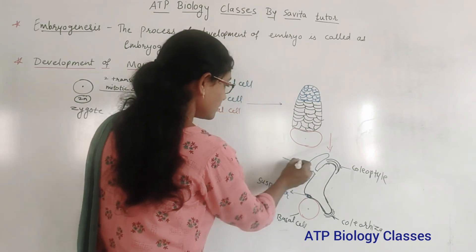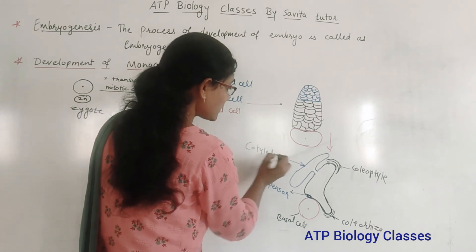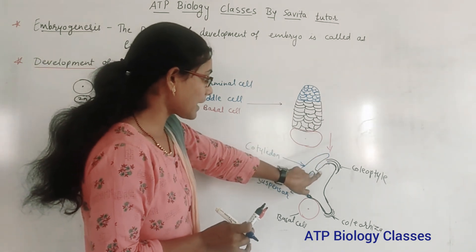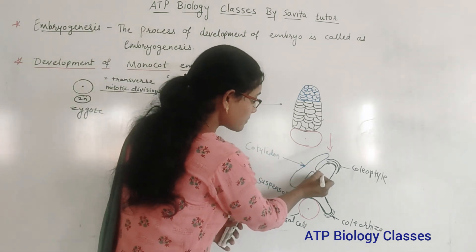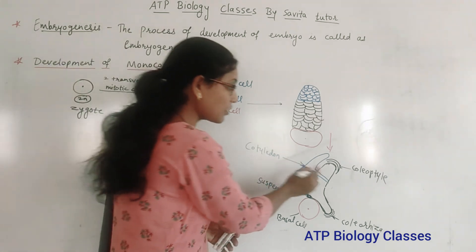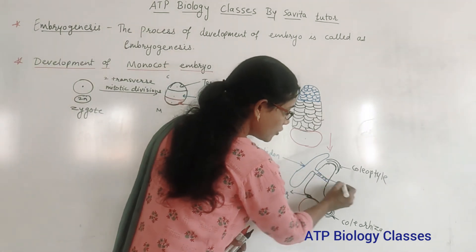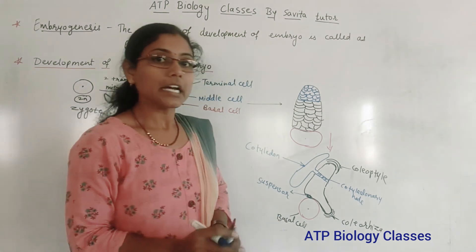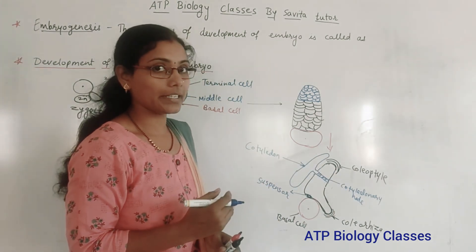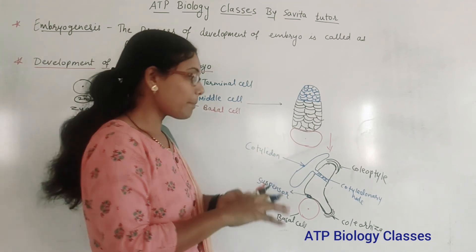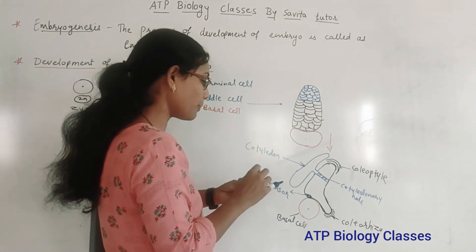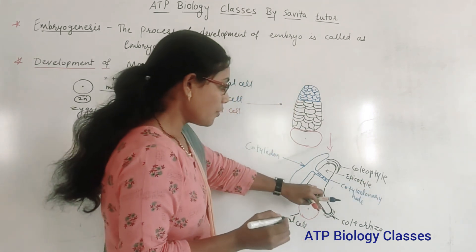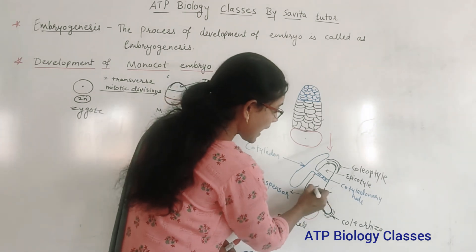There is a single cotyledon, because this is a monocot embryo having only one cotyledon. The cotyledon arises from the embryo at the cotyledonary node. The part above the cotyledonary node is called epicotyl, and the part below is called hypocotyl.